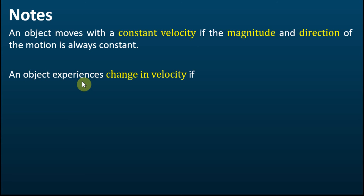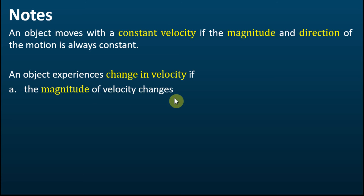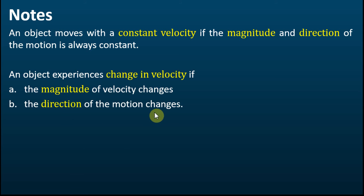An object experiences a change in velocity if the magnitude of the velocity changes — meaning the object moves faster or slower — or if the direction of motion changes. The magnitude can remain unchanged, but if the direction changes, then the velocity has changed, because velocity is a vector quantity. So either the magnitude or the direction changing constitutes a change in velocity.